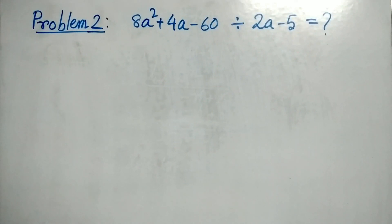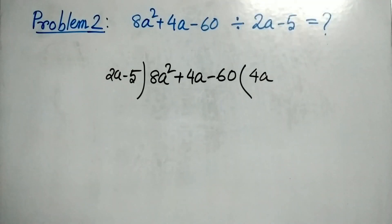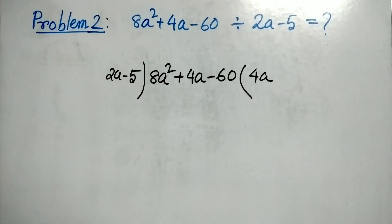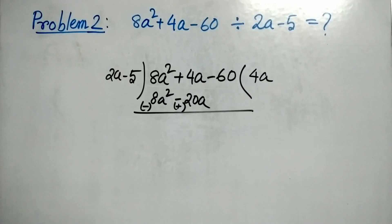As you see, both are polynomials. We have to find a term by which we multiply the divisor to get the first term in the dividend. Here we get 4a, by which we multiply 2a in the divisor to get 8a squared. We have got 8a squared minus 20a and placed it just below the like term in the dividend.